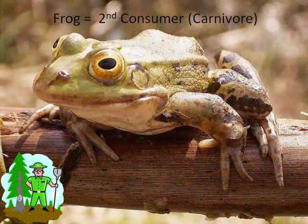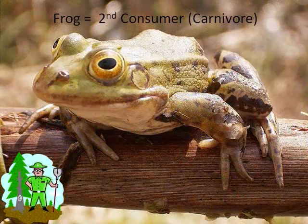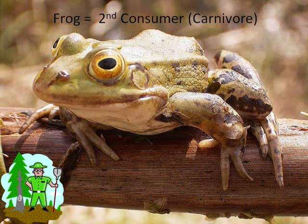After Mr. Grasshopper eats, he takes a stroll outside along the creek until he is spotted by Mr. Frog, as seen here. Mr. Frog was looking for lunch when Mr. Grasshopper came by, and lunch was served. Since Mr. Frog ate another animal, he is called a carnivore. Carnivores are animals that only eat other animals. Mr. Frog is also the second consumer in our chain. If you think that he is the second consumer because he is the second animal to eat something in our food chain, then you are correct.